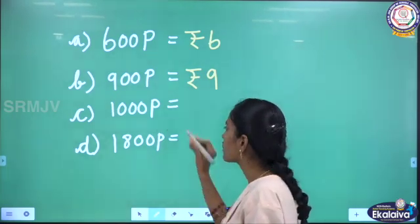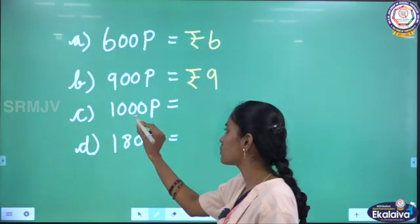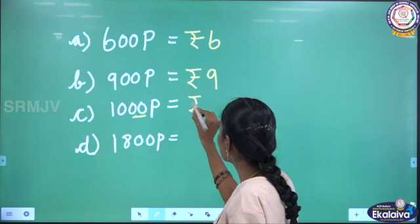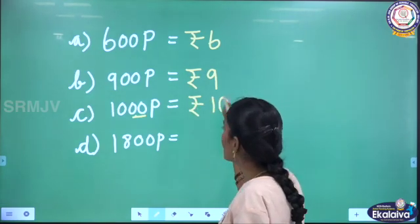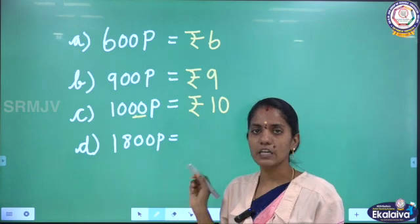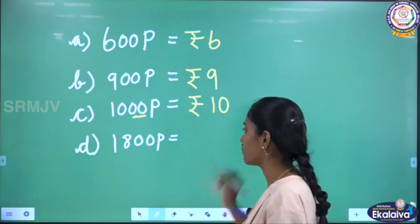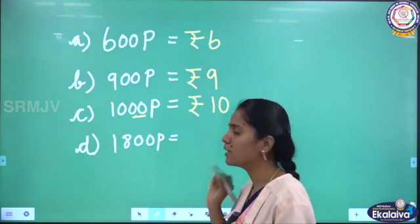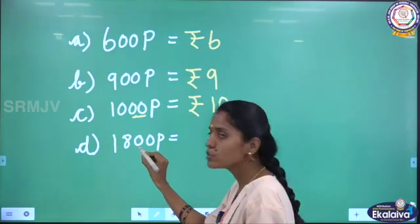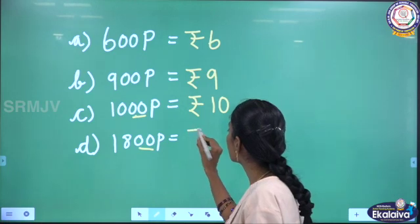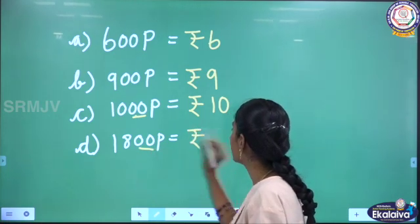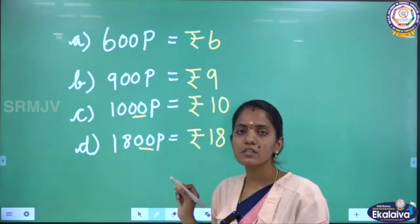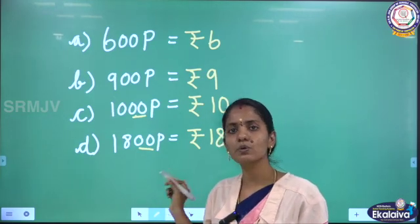1000 peise — we have to remove 2 zeros on the right. Write rupees symbol and 10. 1000 peise equal to 10 rupees. Here I have 1800 peise. I have to remove these 2 zeros on the right. Rupees symbol, 18 is remaining. So 18 rupees. 1800 peise equal to rupees 18.